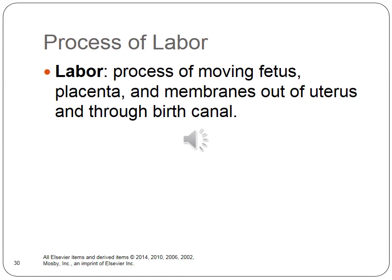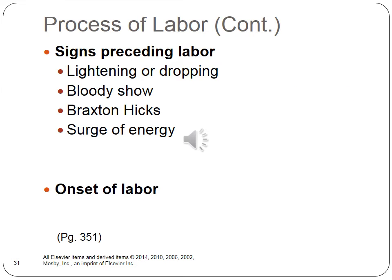Labor is the process of moving the fetus, placenta, and membranes out of the uterus and through the birth canal. Various changes take place in a woman's reproductive system in the days and weeks before labor begins. Signs preceding labor include: lightening or dropping — the fetal head descending into the pelvis two weeks before term in first-time pregnancies; bloody show — a brownish blood-tinged mucus; Braxton Hicks contractions — strong, frequent, and irregular; and a surge of energy, which often occurs just before labor begins. The onset of true labor cannot be ascribed to a single cause; many factors are involved, including changes in the maternal uterus, cervix, and hormonal changes.